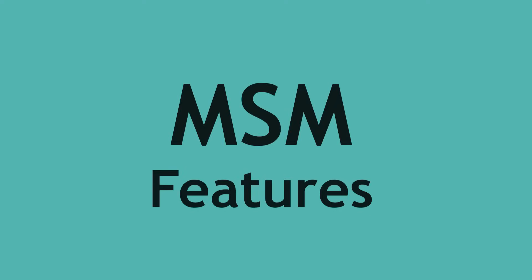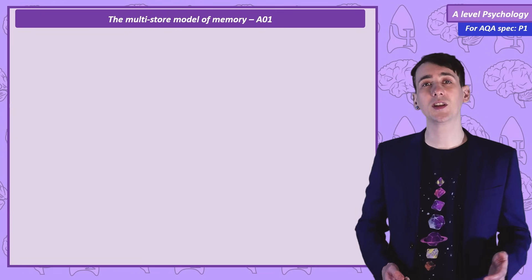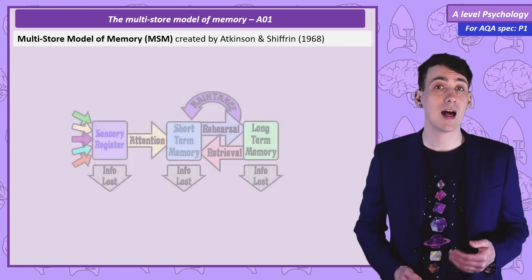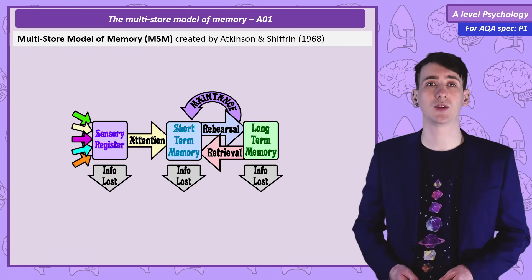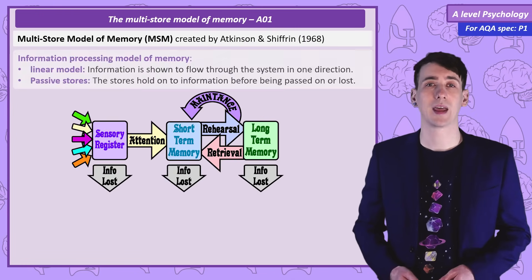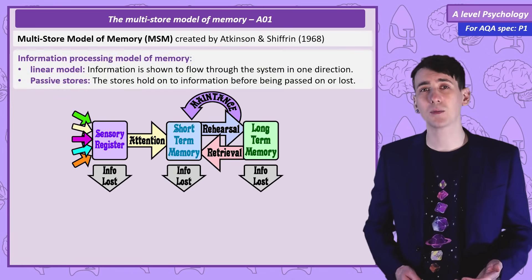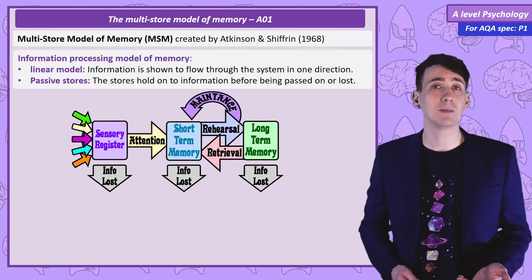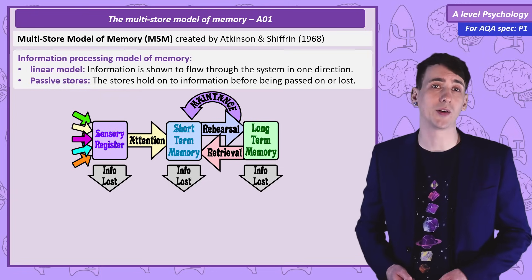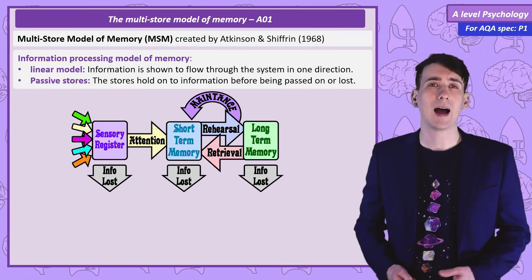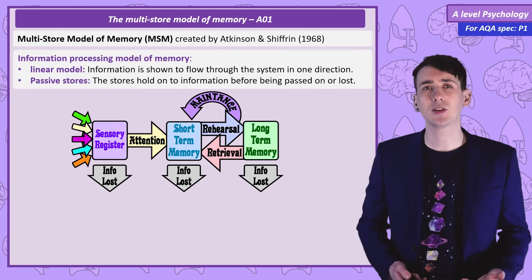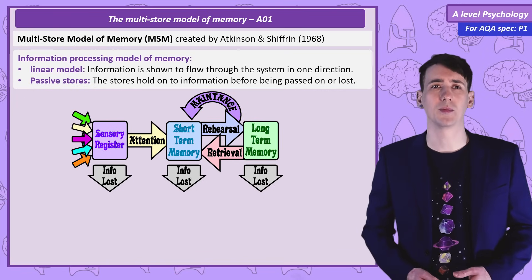Features of the multi-store model. Created by researchers Atkinson and Schiffrin in 1968, this is the multi-store model. It's an information processing model — it's linear, meaning information is moved through in one direction, and the stores are passive, meaning they just hold on to information.